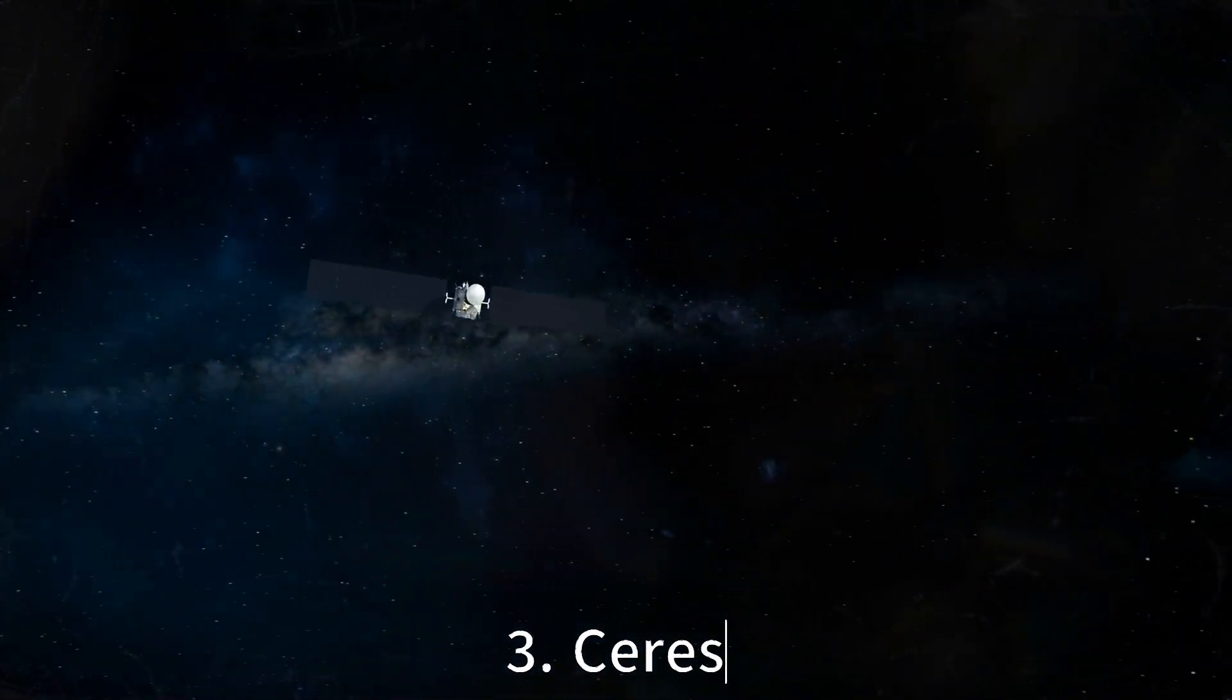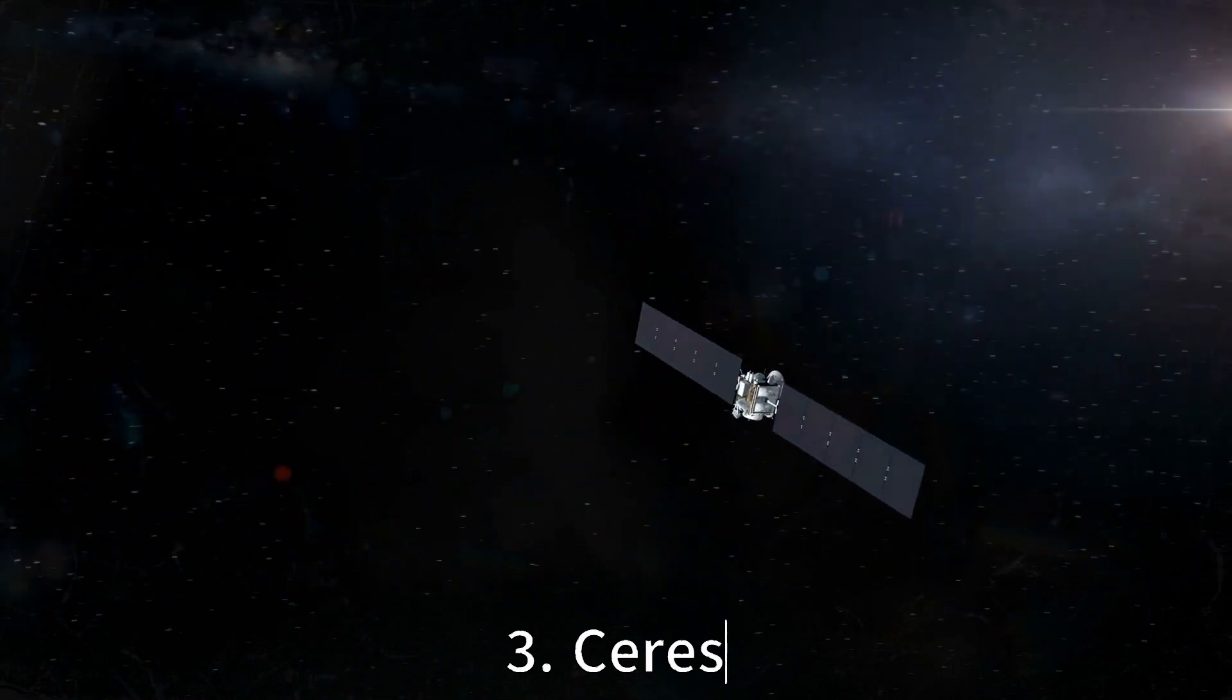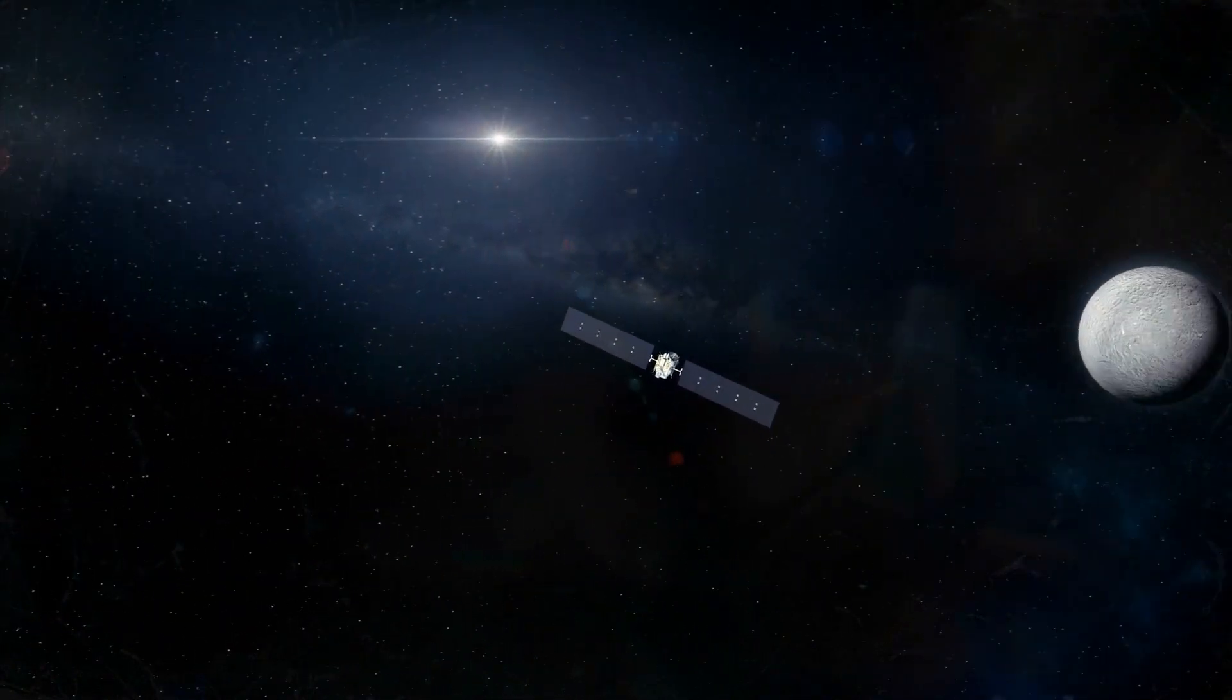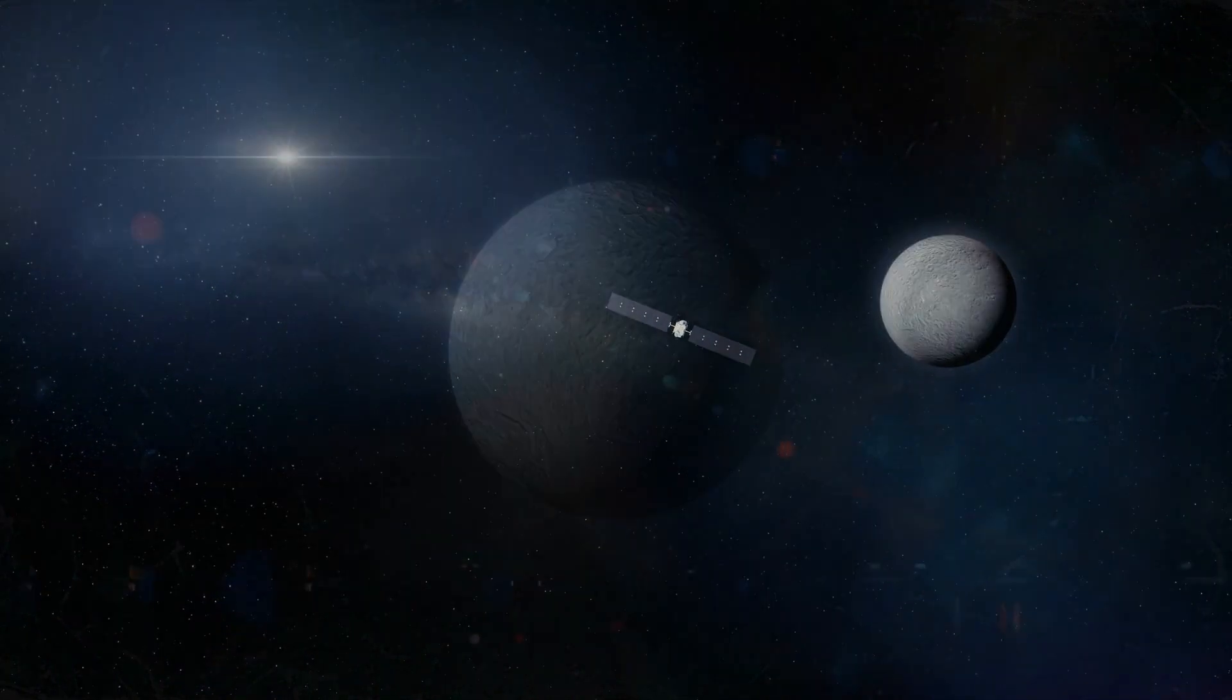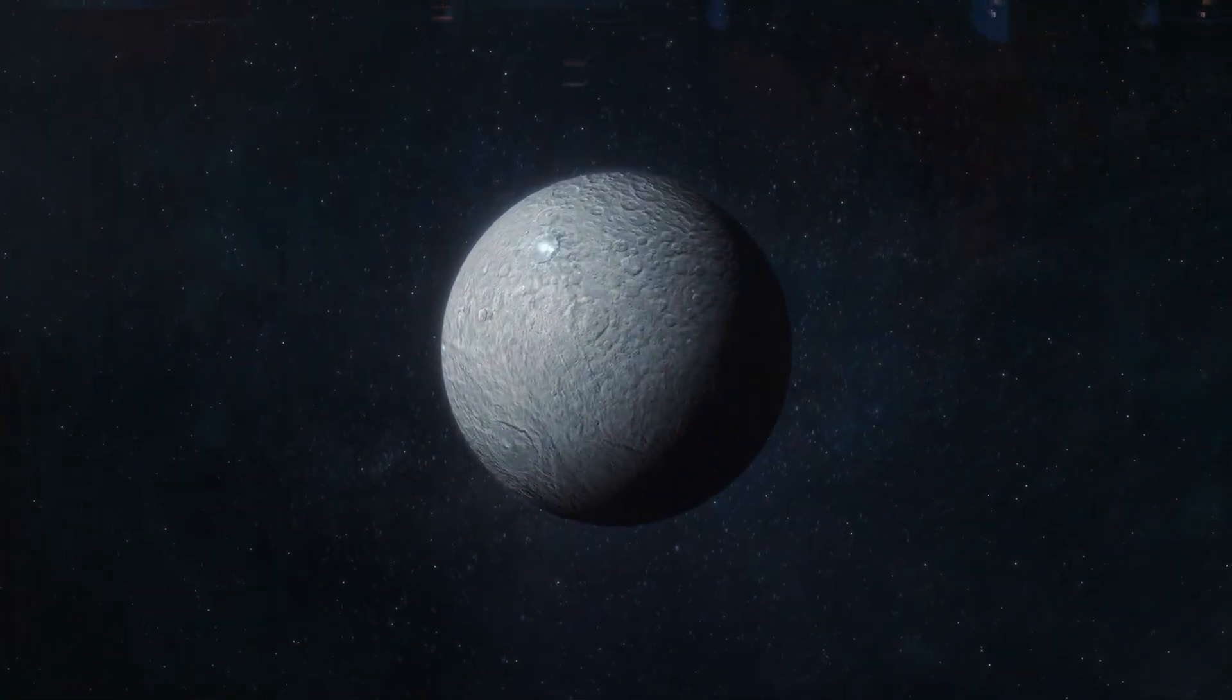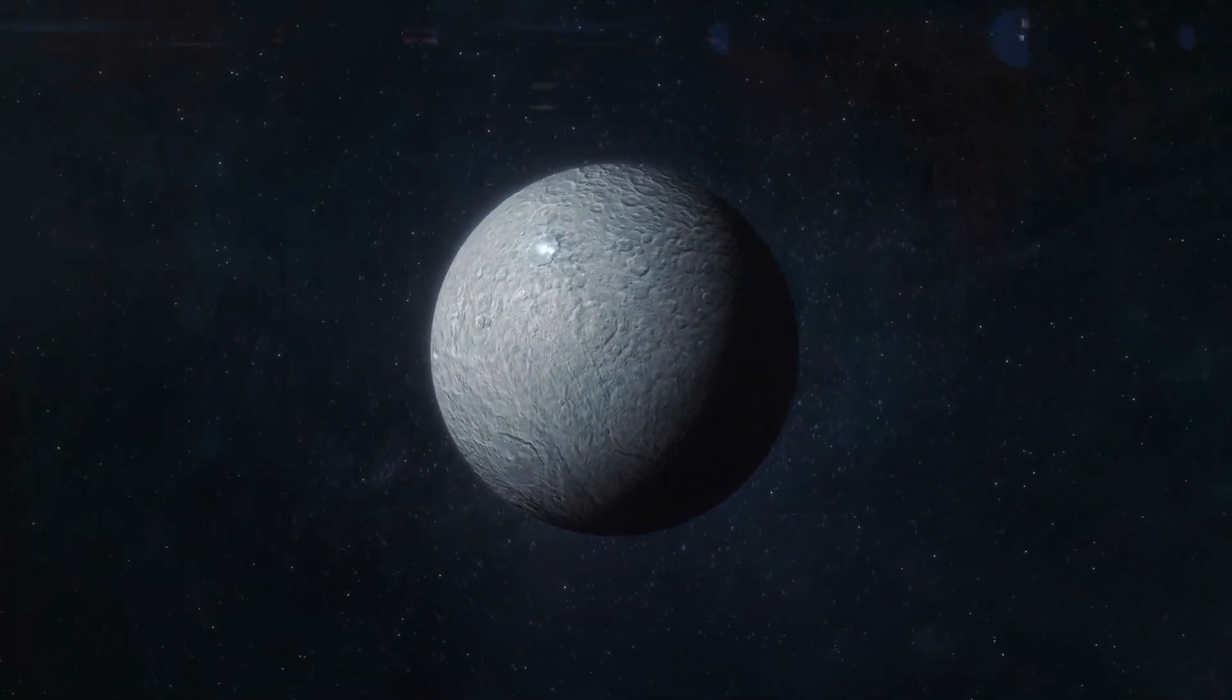The largest asteroid in the solar system is Ceres, which is located in the asteroid belt between Mars and Jupiter. It is around 590 miles in diameter and contains about one third of the mass of the entire asteroid belt.